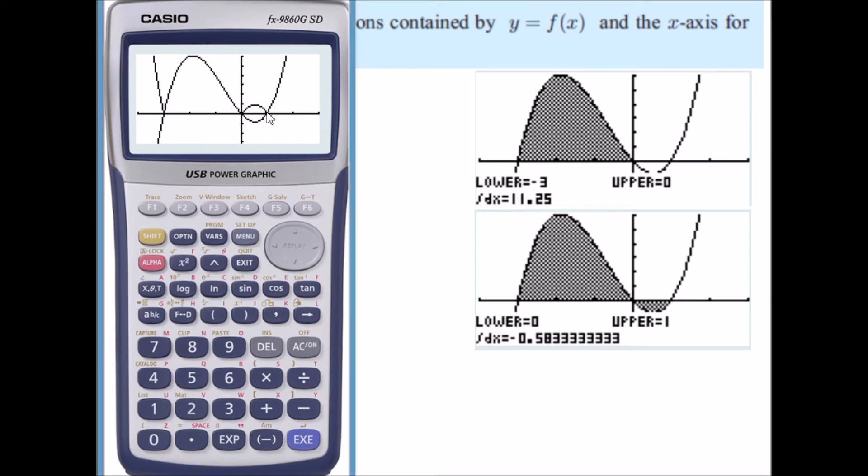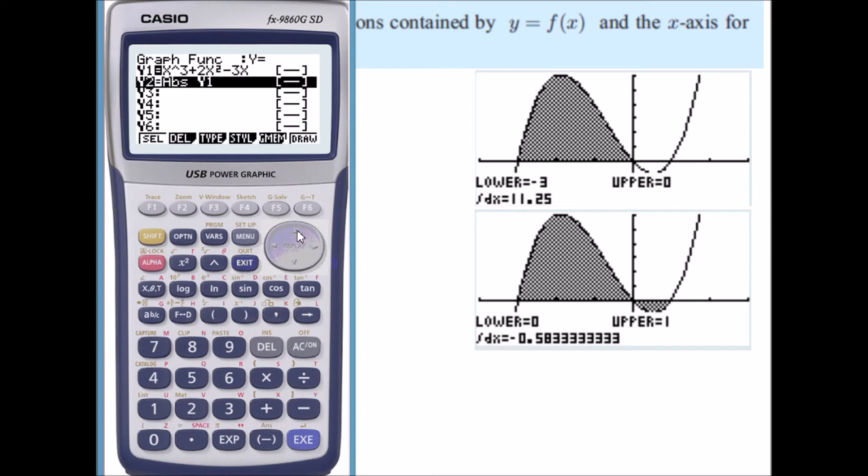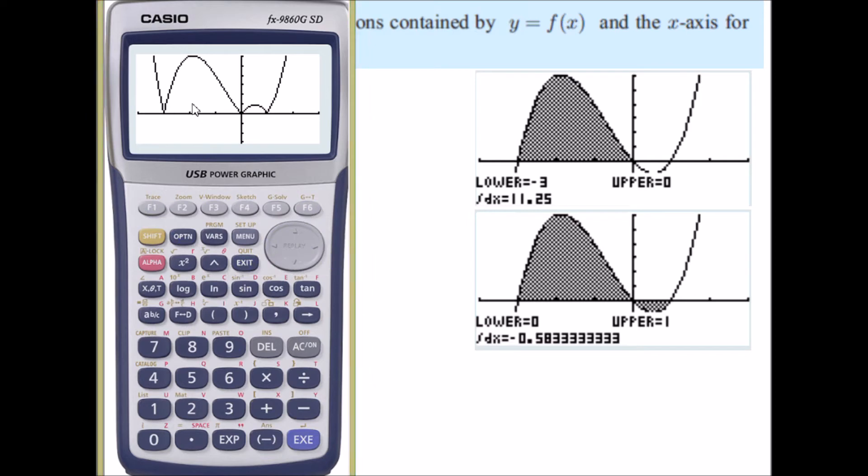So the y-values here are positive. So if I get rid of my original function and just draw the modulus function. Now if I worked out the definite integral between minus 3 and plus 1. Both of these sections here are above the x-axis. And therefore I will actually get the area. So once again, g-solve.